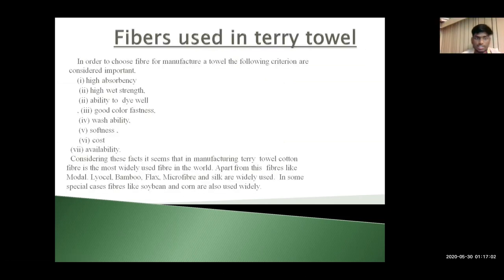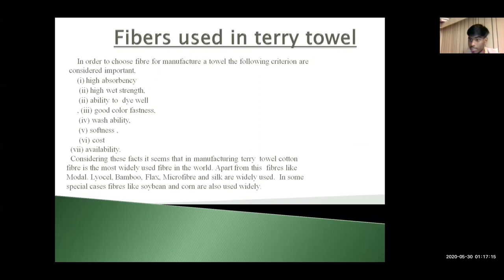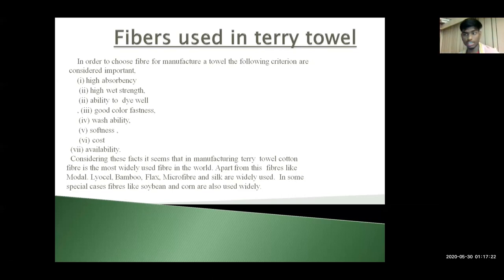Fibers used in terry towels should have the following criteria: highly absorbent, high wet strength, ability to dye well, good color fastness, washability, softness, low cost, and availability. It should be available — that is the first thing. It should be low cost. And after washing, the color shouldn't fade away. You wouldn't want a towel that has a good pattern and good color but fades after the first wash.